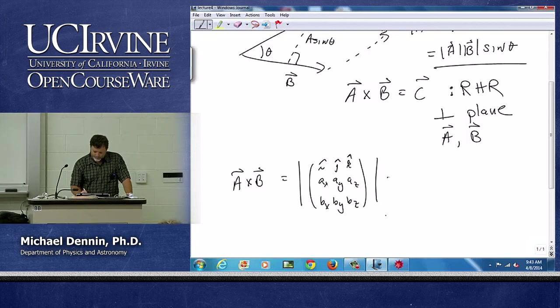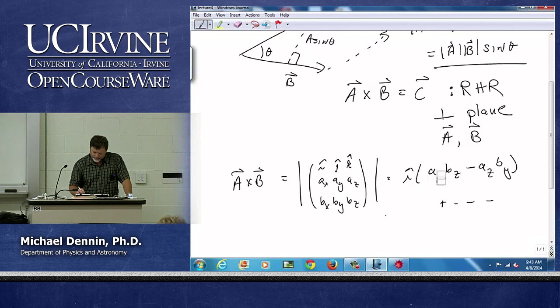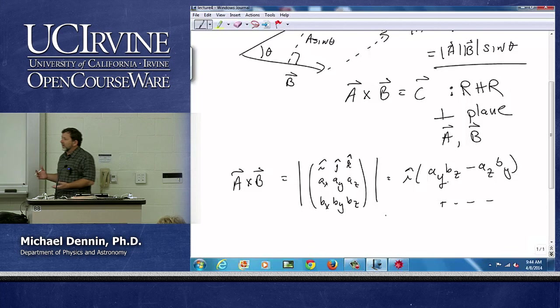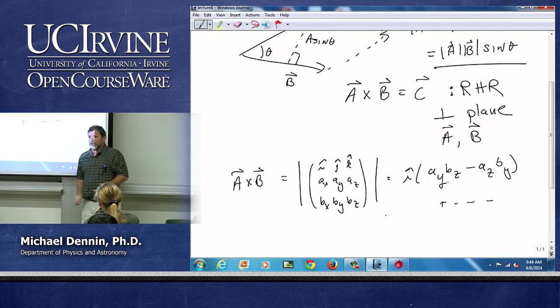But when I take this determinant, I get i hat times a_y b_z minus a_z b_y plus dot dot dot, all the other terms, and I see that I get out the actual cross product. The x component, the y component, and the z component.